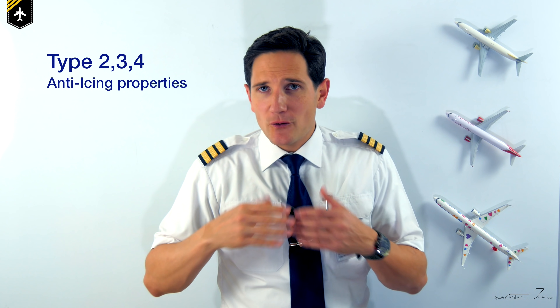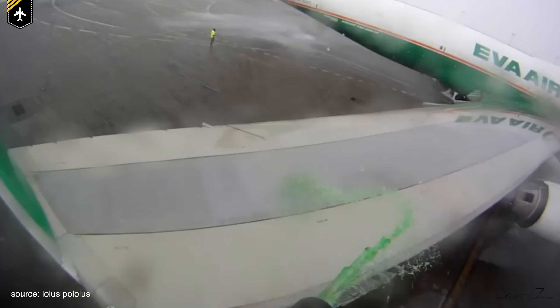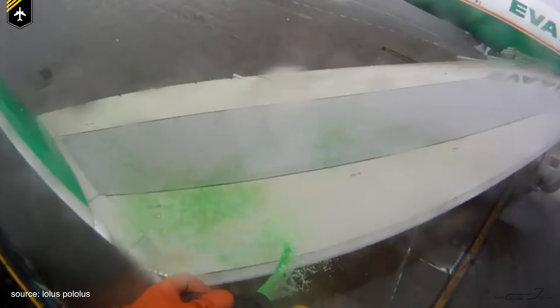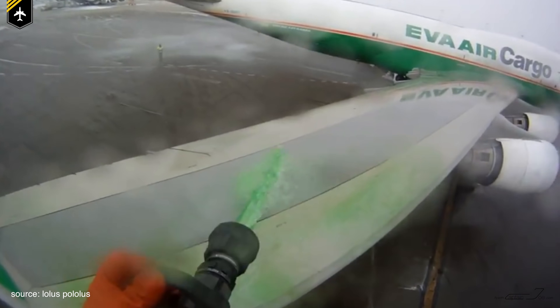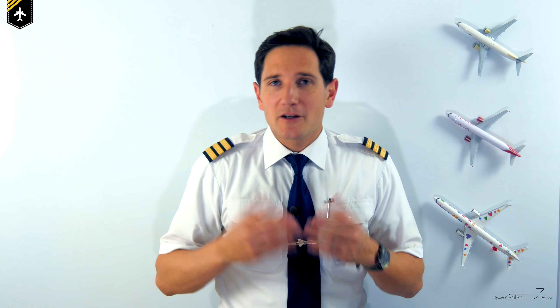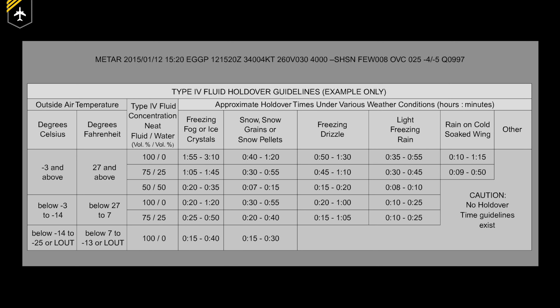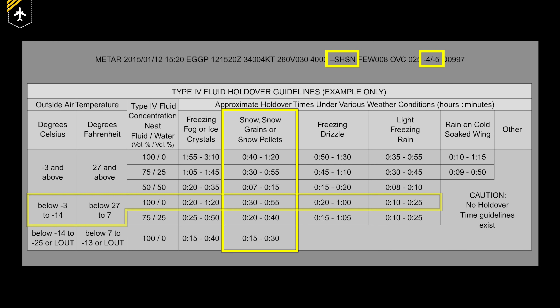Type 2, 3, and 4 fluids all have anti-icing properties — when applied to a clean surface, they are designed to protect the aircraft from ice accumulation for a predicted length of time: the so-called holdover time. The ground crew will inform you about the type and mixture used and when the spraying operation started. You then open up the holdover timetable to check how long the application will hold over until your takeoff. For example, with light snow showers at minus 4 degrees Celsius, reading across from temperature and conditions, you derive a holdover time for undiluted type 4 fluid of 30 to 55 minutes.